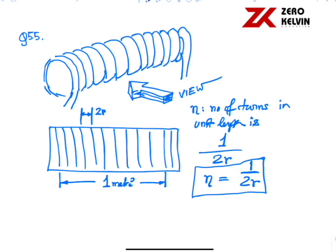if the current is given, suppose I is the current, then the magnetic field inside it is mu 0 N I. So that is mu 0, 1 by 2R into I.